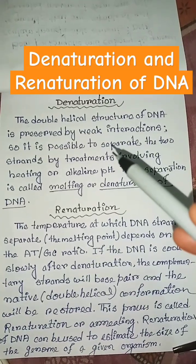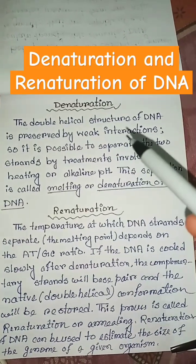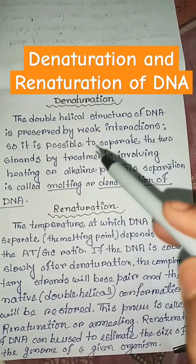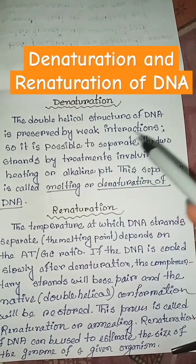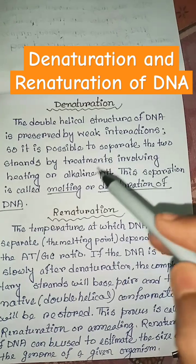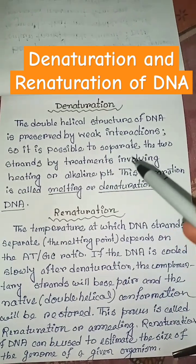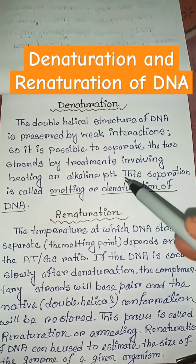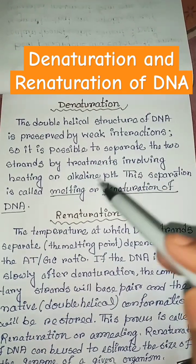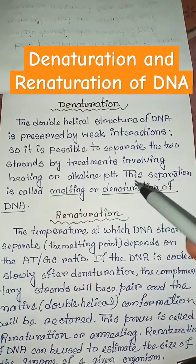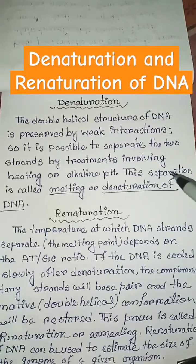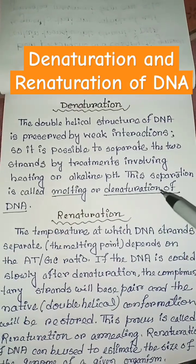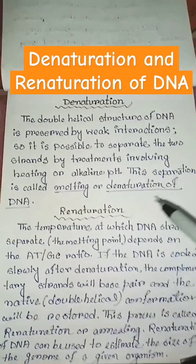What is denaturation of DNA? The double helical structure of DNA is preserved by weak interactions, so it is possible to separate the two strands by treatments involving heating or alkaline pH. This separation is called melting or denaturation of DNA.